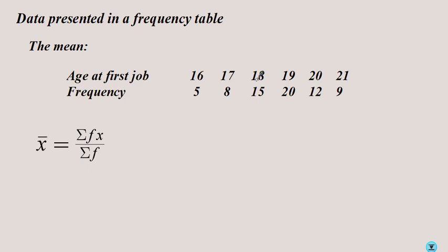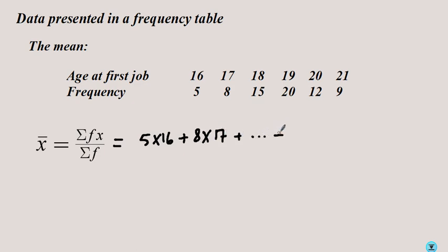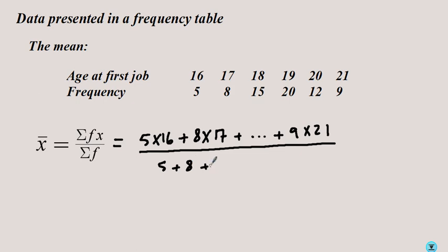The mean in this case is calculated by finding the sum of the ages. For example, the sum of the ages of those 5 people is 5 times 16, and for the next group it's 8 times 17, and so on. So this mean can be calculated as 5×16 plus 8×17, continuing this process until you get to 9×21, and this is divided by the sum of the frequencies, which is 5 plus 8 plus 8 etc. until you get to 9. This approximately equals 18.77 years.